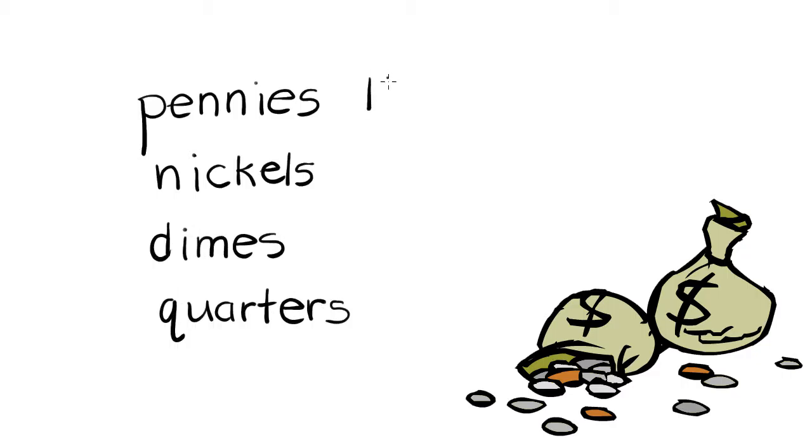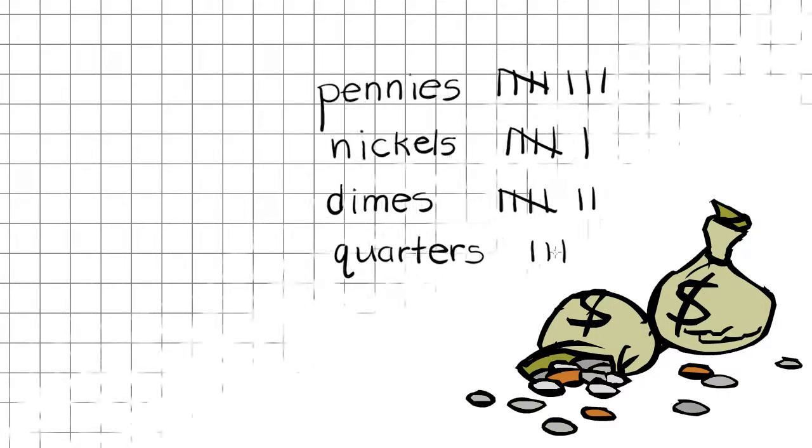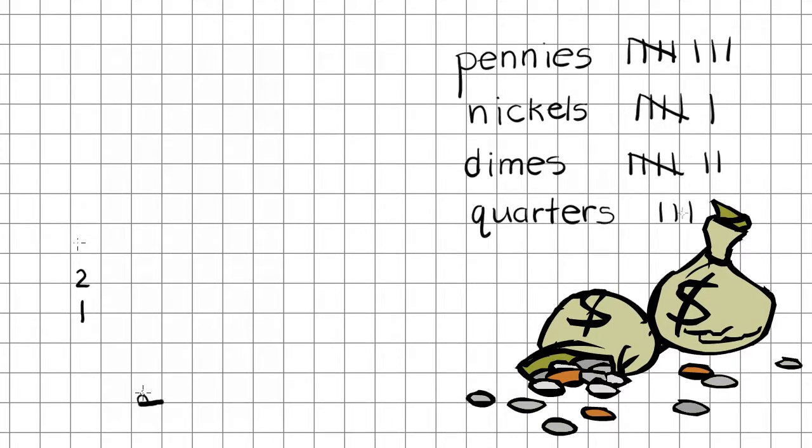Let's say you found eight pennies, and you found six nickels, you found seven dimes, and you only found three quarters. You would then take those tally marks and turn them into a data bar graph.